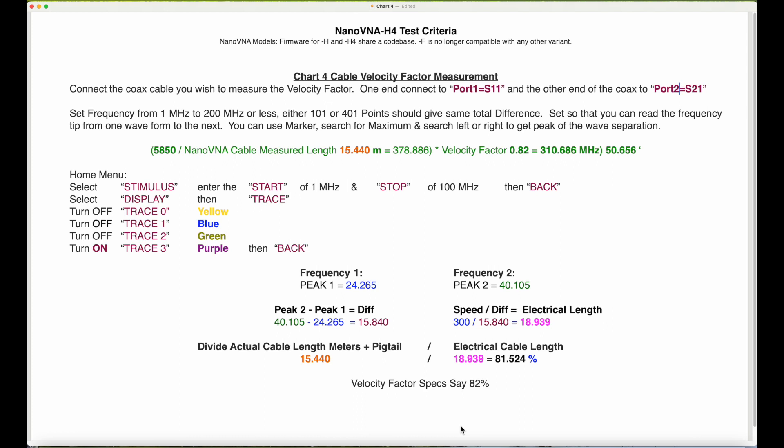Okay, you go to home menu, select stimulus. You enter the start of 1 megahertz and the stop of 100 megahertz, then back. Select display, then trace. You want to turn off trace zero, which is the yellow, turn off trace one which is blue, trace two which is green you want off. So the only trace you're going to have is trace three, which is purple. Then back.